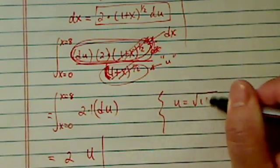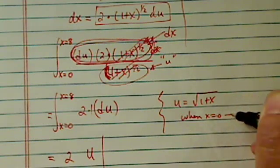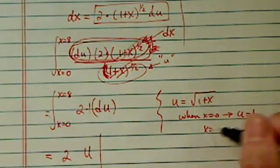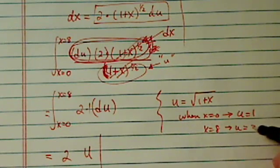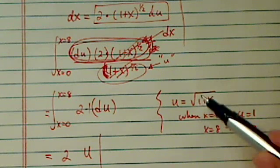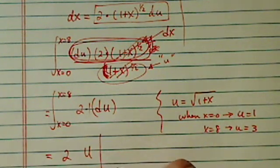u is equal to radical 1 plus x. So when x is equal to 0, we have u equal to 1. When x is equal to 8, we have u equal to 3. Because it's a radical 1 plus 8, which is 3. So u, lower bond, is 1. Upper bond is 3.